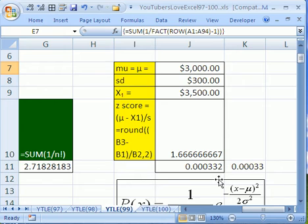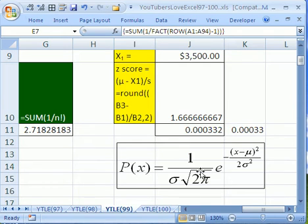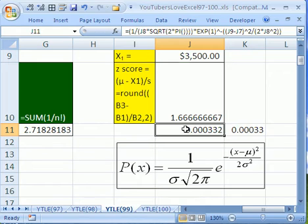If you scroll over here in statistics, there's a normal distribution function that requires the number E. If I click here and hit F2, this is how you do it: you use the exponent function with number 1, and that's how you can get the number E.